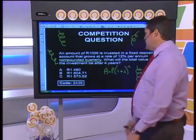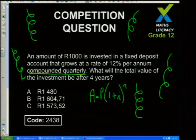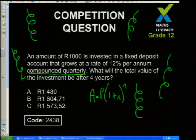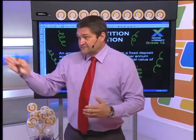Remember, there are only five minutes left. Here's the question again: an amount of R1,000 is invested in a fixed deposit account that grows at 12% per annum, compounded quarterly. What will the total value be after four years? A: R1,480. B: R1,604.71. C: R1,573.52. Hint: A = P(1 + i)^n, and remember it's compounded quarterly. The code is 2438. Also, if you have questions you'd like me to go through, please send them through.